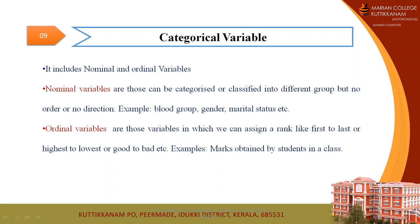The last type is categorical variable, which includes nominal variable and ordinal variable. Nominal variable means those variables in which a researcher can categorize or classify subjects into different groups, with no order or direction in the classification. For example, blood group, marital status, or gender have no prescribed order — for marital status we can say either married or unmarried, but there is no inherent order or distance between categories.